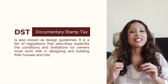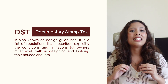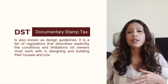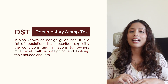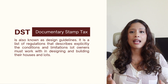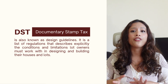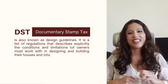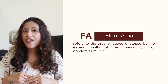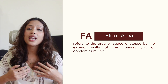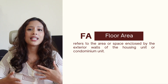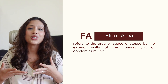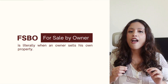DST, for Documentary Stamp Tax, is a tax on documents, instruments, loan agreements, and papers evidencing the acceptance, assignment, sale, or transfer of an obligation, right, or property incident thereto. FA, for Floor Area, refers to the area or space enclosed by the exterior walls of the housing unit or condominium units. FSBO, for For Sale by Owner, is literally when an owner sells his own property. GF means Ground Floor. HL means House and Lot.